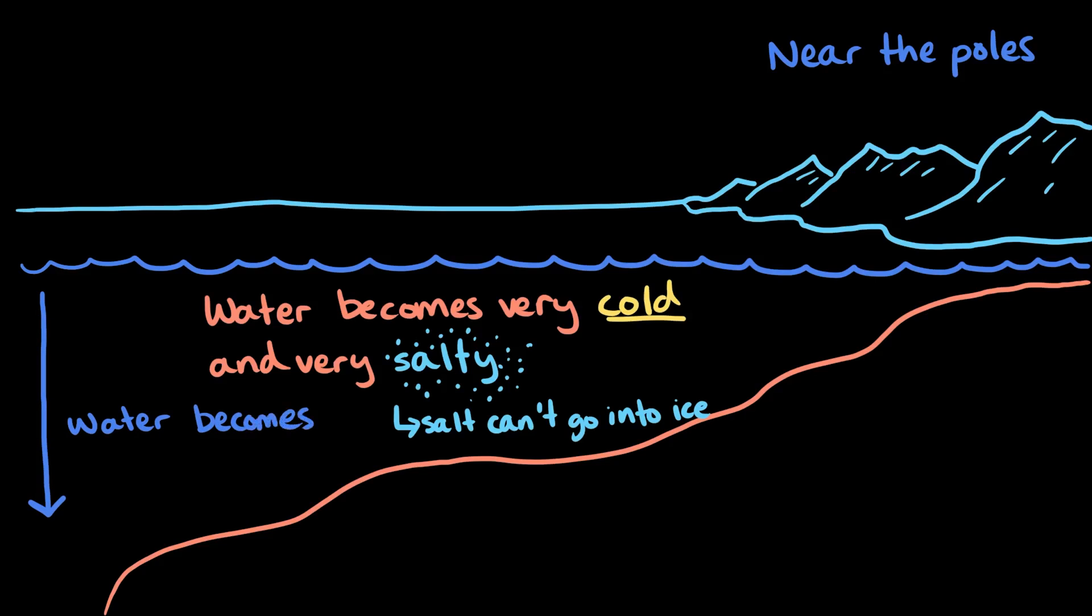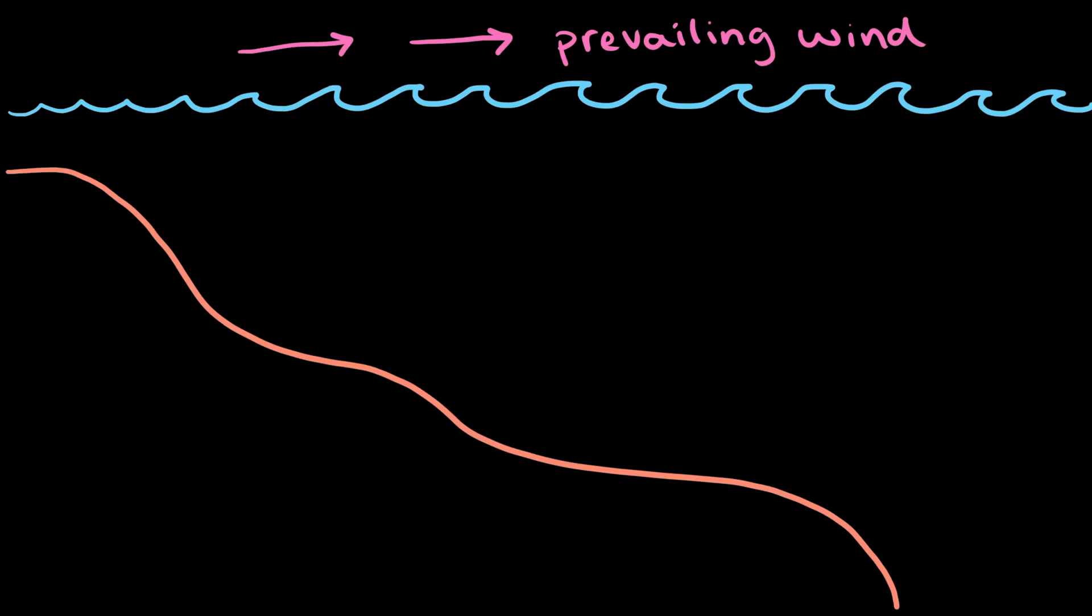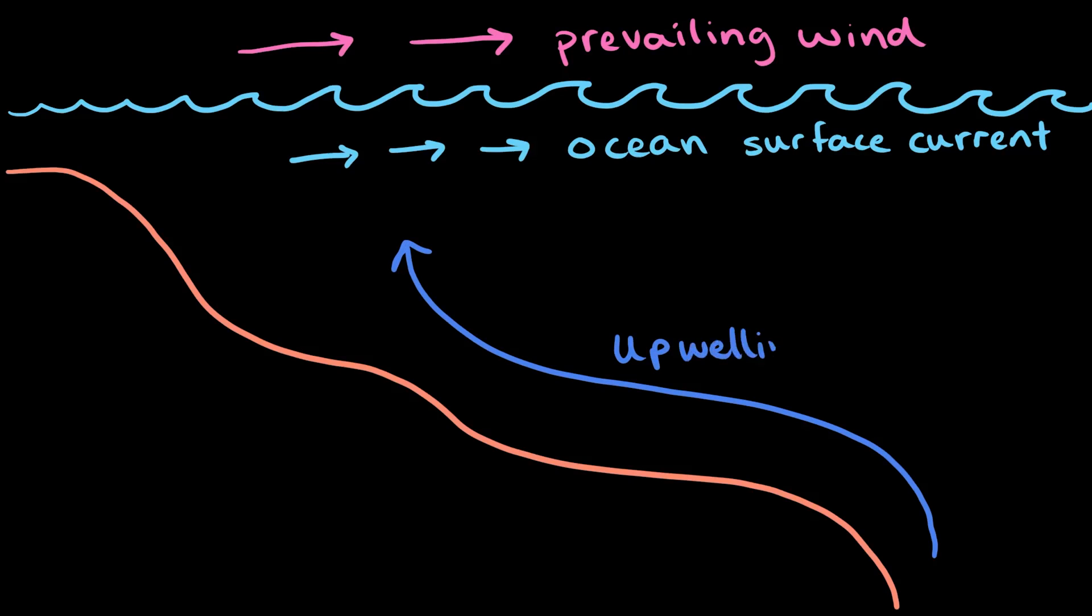Together, the coldness and salinity makes the water very dense, causing it to sink deep into the ocean. In other parts of the ocean, wind drags deep water up to the surface in a process called upwelling. These vertical currents are connected by horizontal currents at the surface and in the deep ocean.